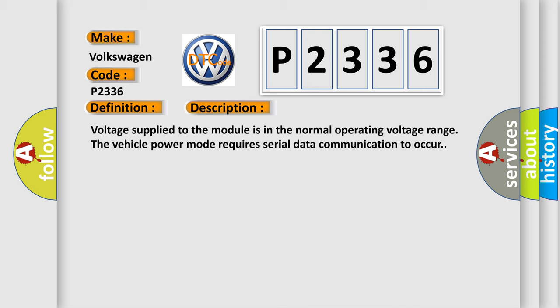And now this is a short description of this DTC code. Voltage supplied to the module is in the normal operating voltage range. The vehicle power mode requires serial data communication to occur.